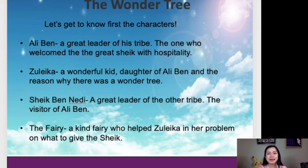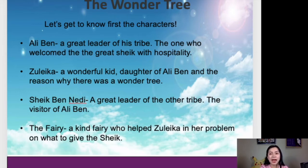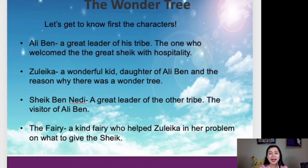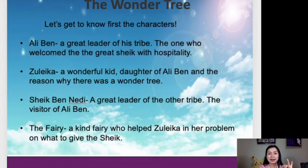We have Ali Ben. Ali Ben is a great leader of his tribe. He is the only one who welcomed the great Sheik with hospitality. We also have Zuleika — she is a wonderful kid, a daughter of Ali Ben, and the reason why there was a wonder tree. We also have Sheik Ben Neddy — he is a great leader of the other tribe and the visitor of Ali Ben. And lastly, we have The Fairy, a kind fairy who helped Zuleika with her problem on what to give the Sheik. How many characters do we have? We have four characters.